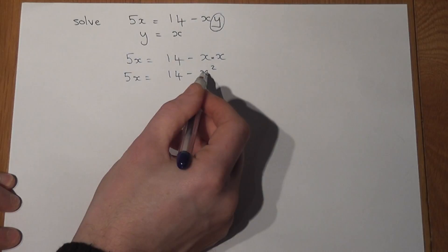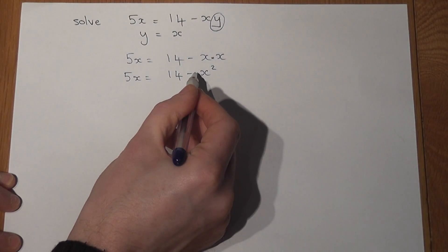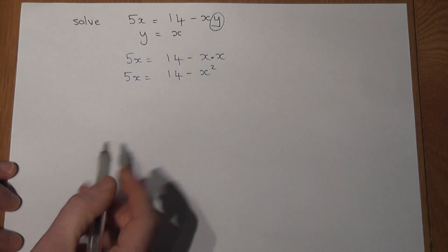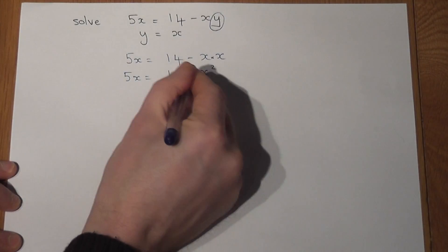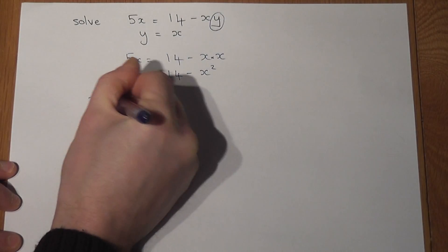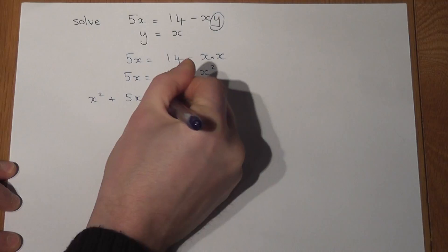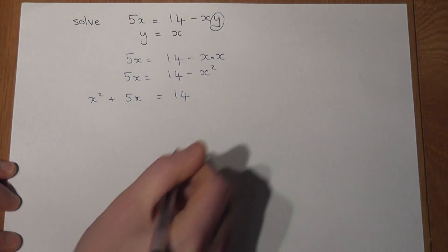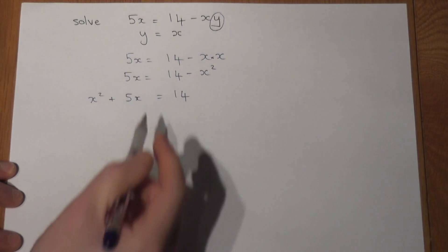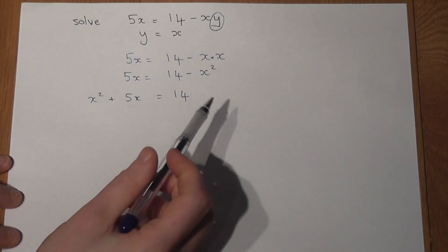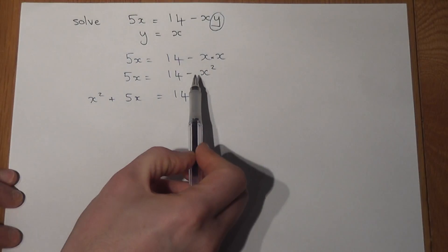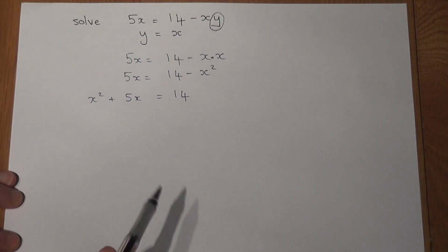So if I add the x squared term to the left hand side I'll get positive x squared and a 5x equals 14. Remember as terms move sides their signs basically change. So what was a negative x squared becomes a positive x squared.